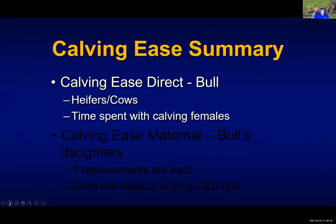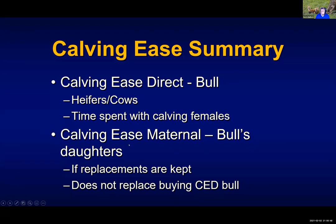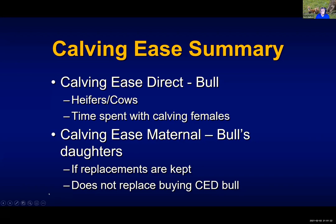In summary, if you're wanting to buy a bull that you're going to breed to heifers or cows and want to make sure he is a calving ease bull, that's the calving ease direct EPD. The level that you need has to do with that heifer-to-cow ratio you're going to be breeding the bull to and the amount of time spent with the females during calving. Calving ease maternal, on the other hand, gives you an indicator of that bull's daughters — if you're keeping replacements back, higher values means that bull's daughters will be easier calvers. But the bull you're buying to breed to those heifers still needs to be an adequately calving ease direct bull. Make sure that you utilize both of these tools to help.